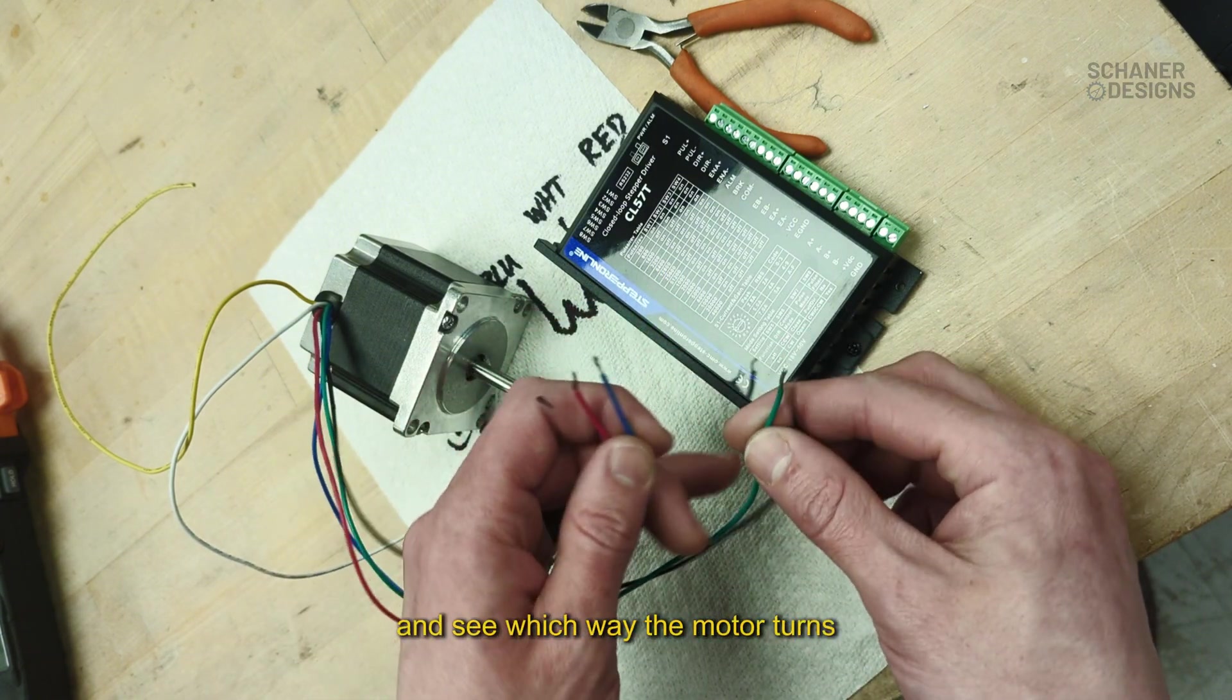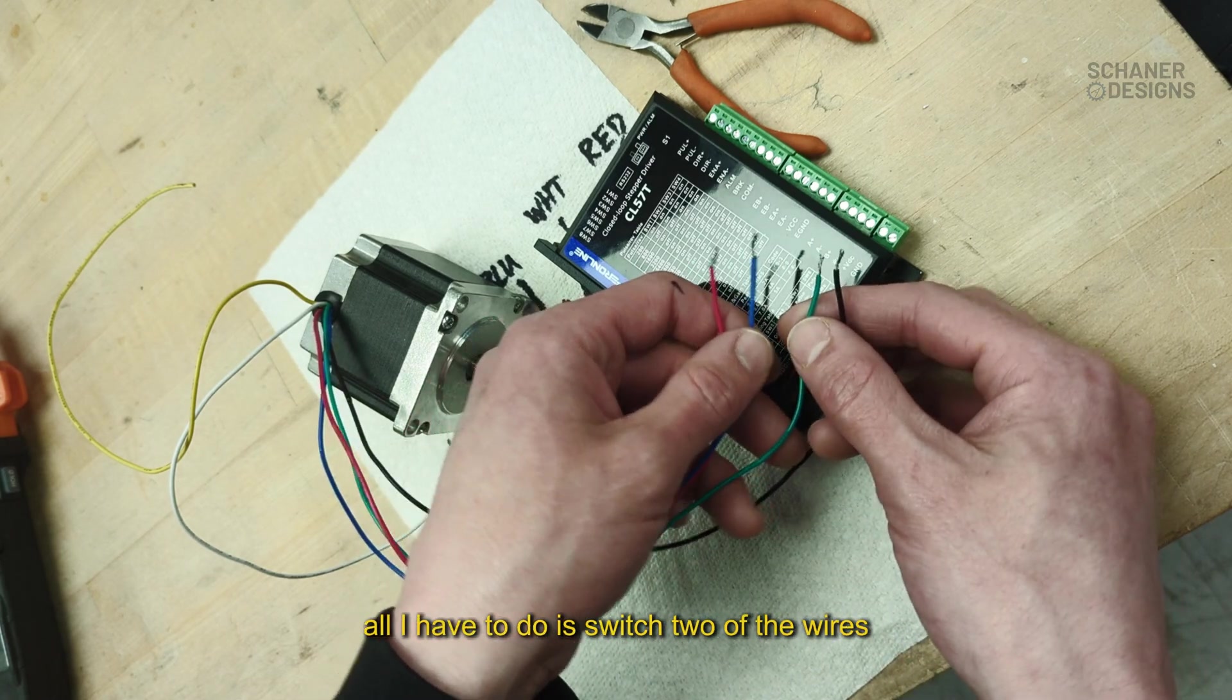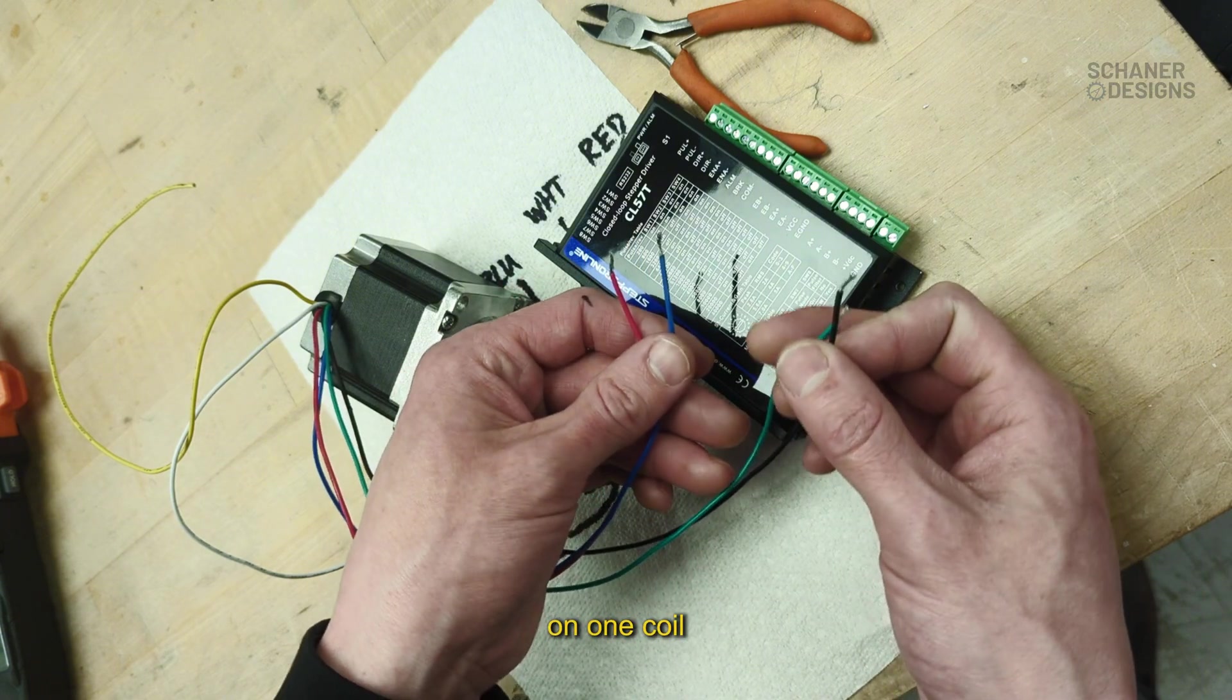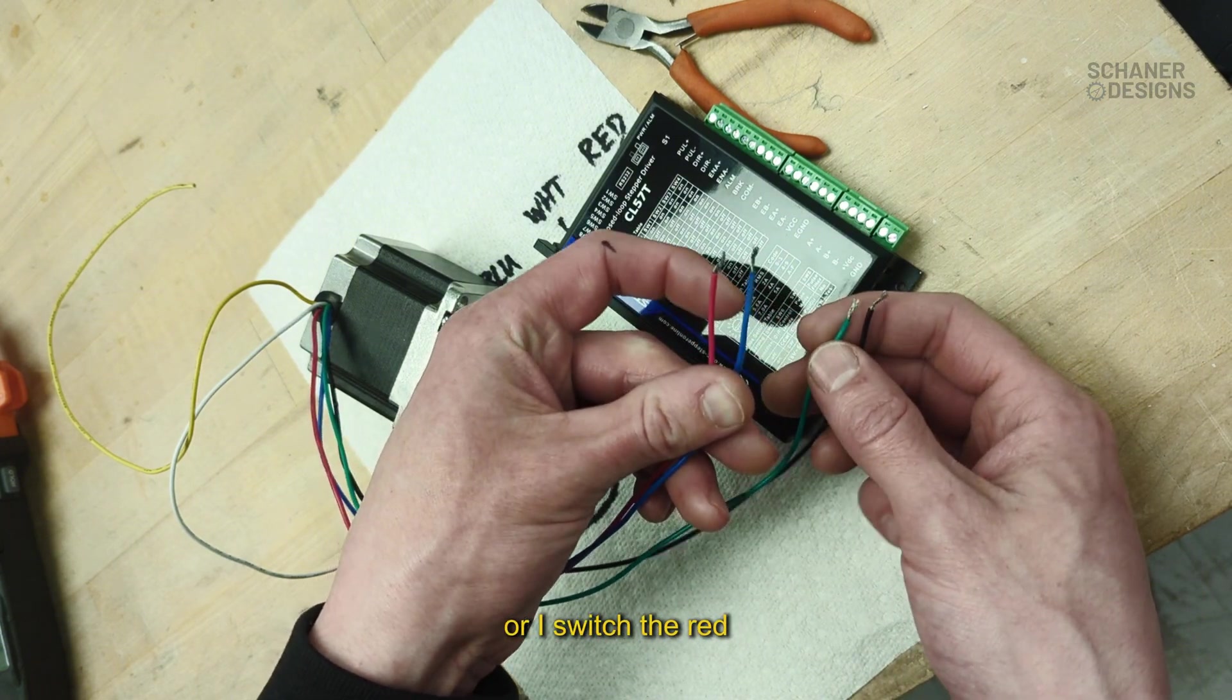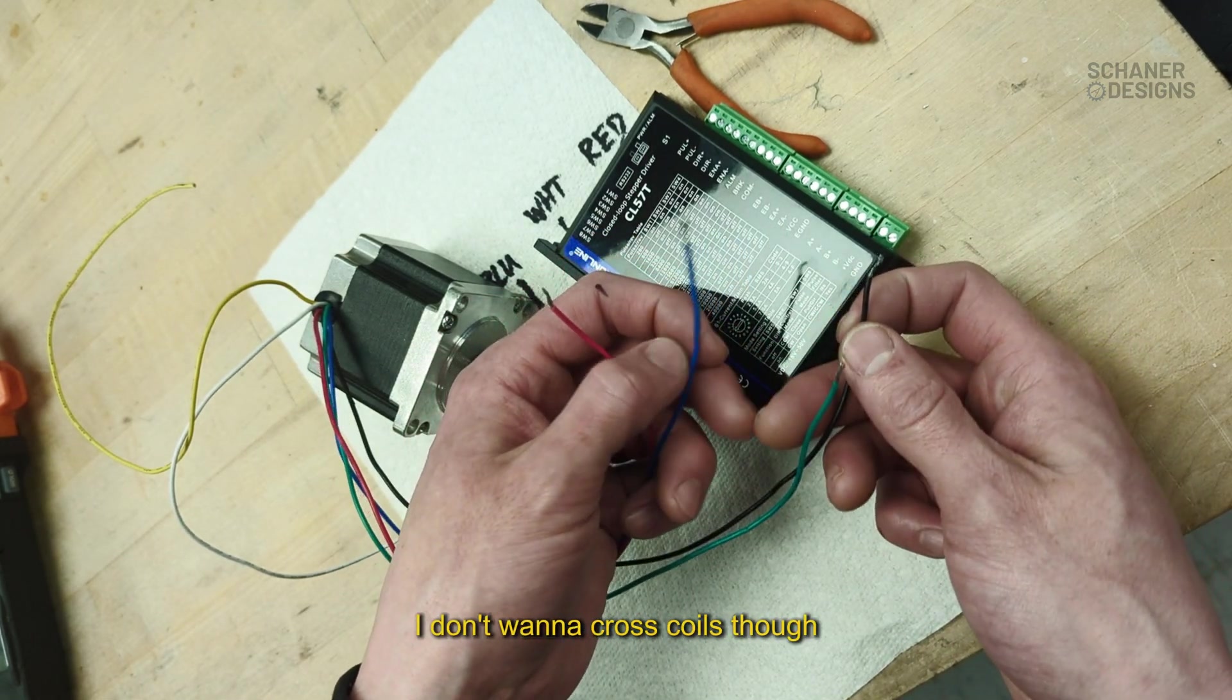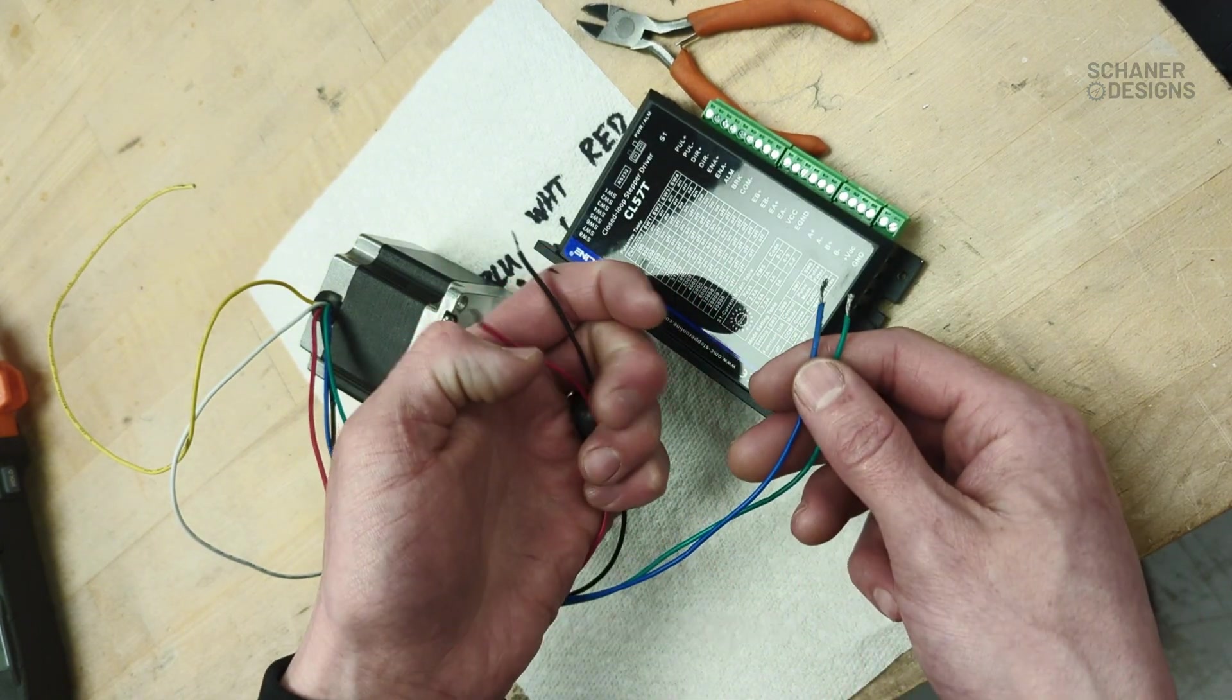It doesn't matter if I've got the plus or the minus switched—that's just going to change the direction. I'm just going to hook it up and see which way the motor turns. If it's opposite from what I want, all I have to do is switch two of the wires on one coil. Either I switch the black and the green, or I switch the red and the blue. I don't want to cross coils though, that's not going to be any good.